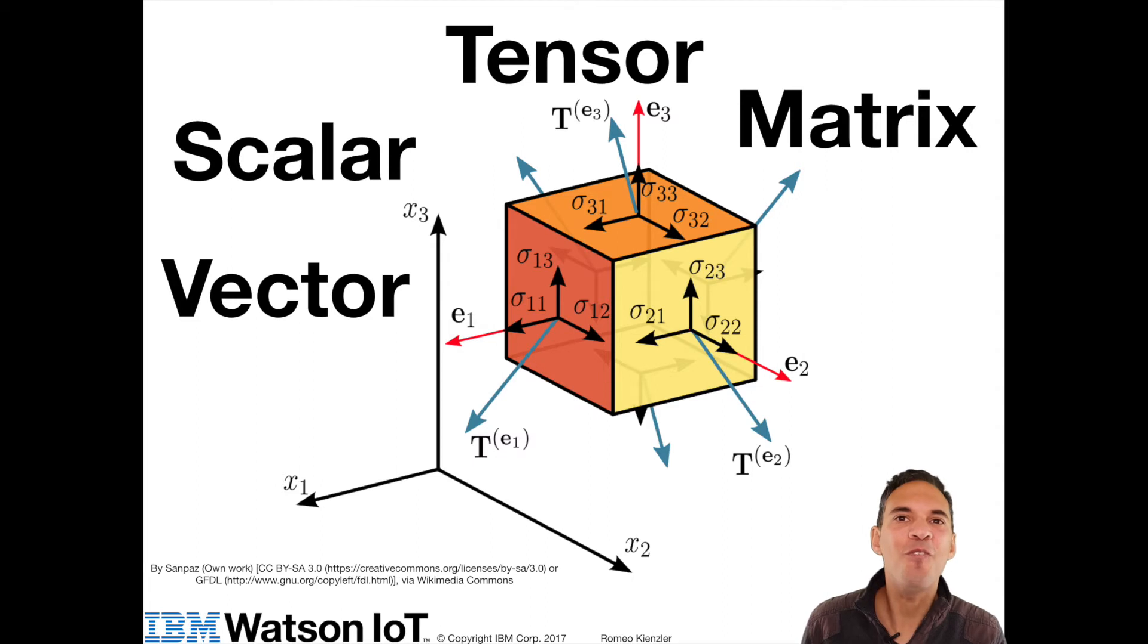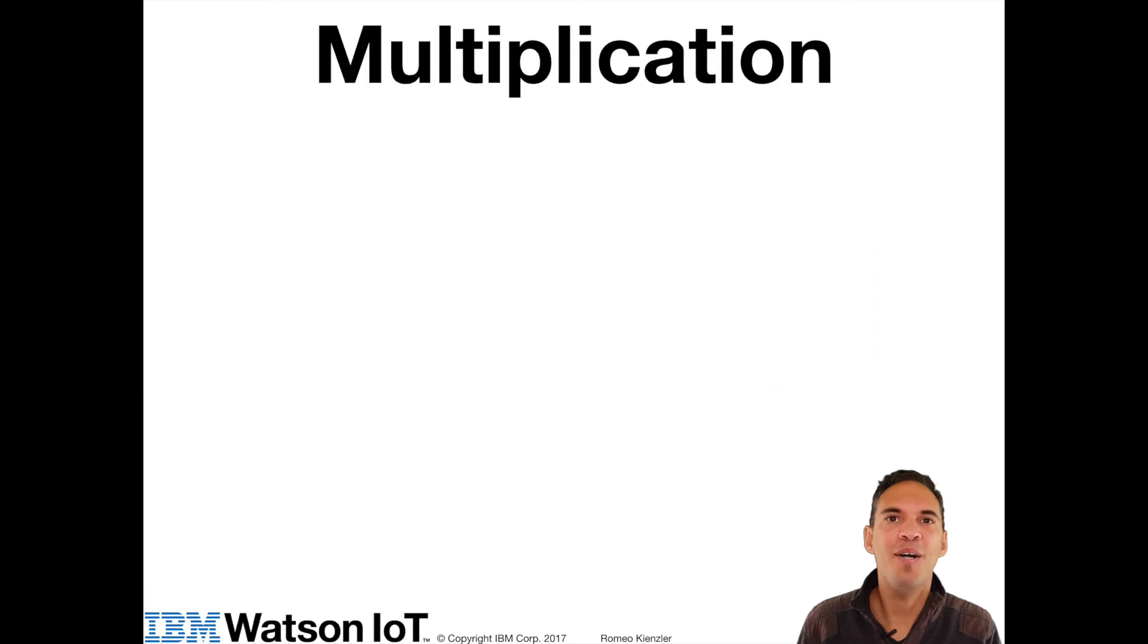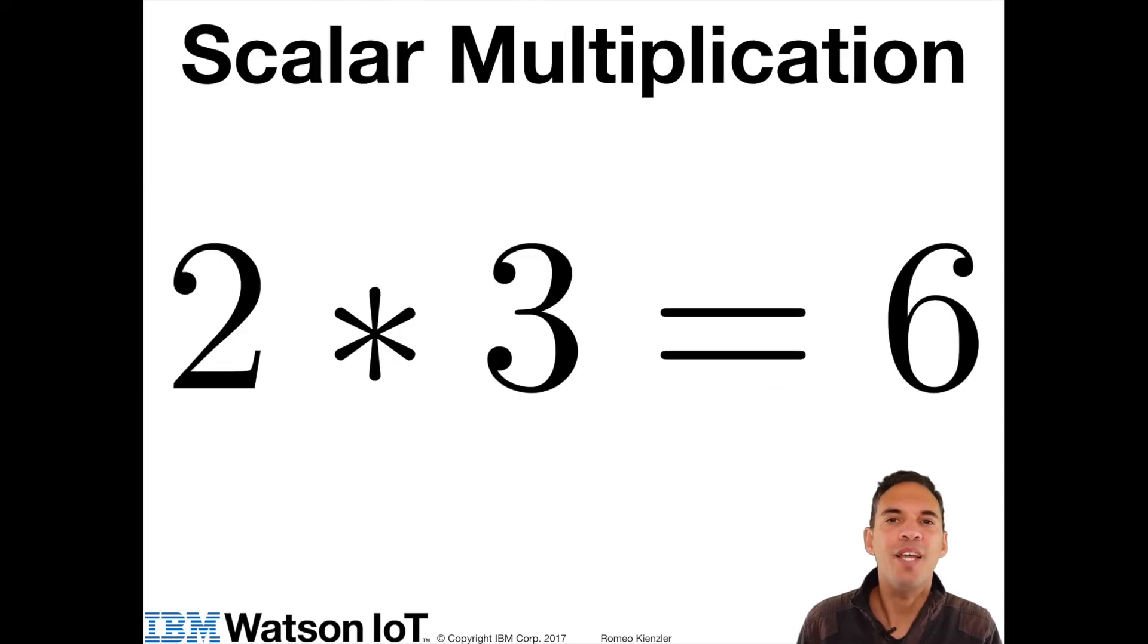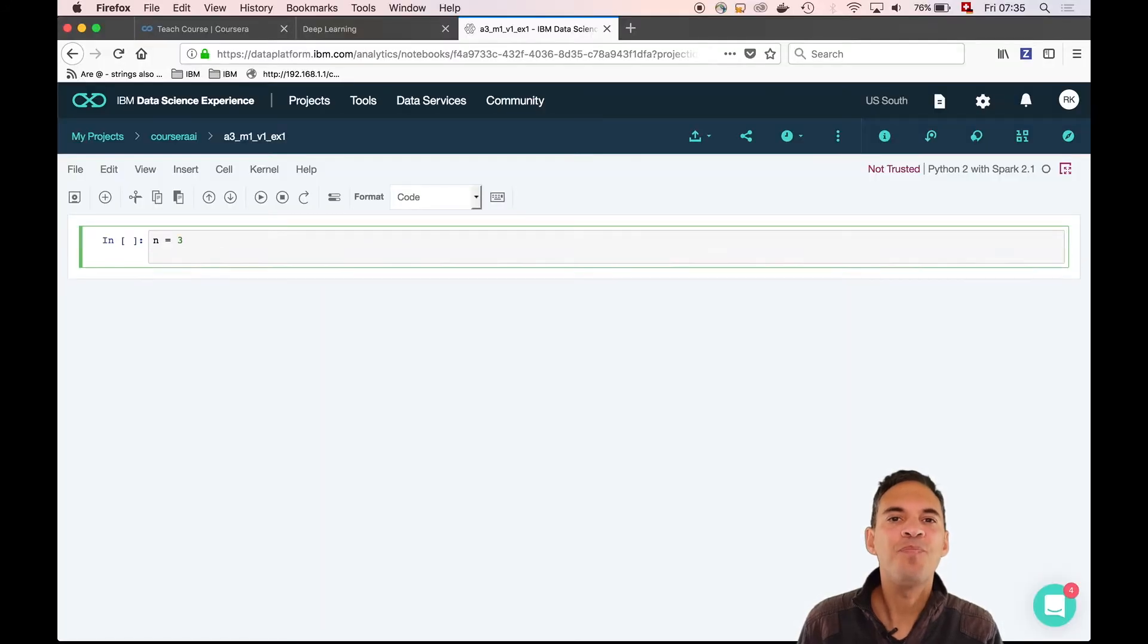So now you can really show off in front of your colleagues by knowing all those terms. So let's start with some math. The most important mathematical operation on tensors used in this course is multiplication. We can multiply two scalars. So let's start with two integers, 2 and 3. If we multiply them together, we get 6.